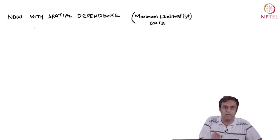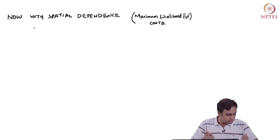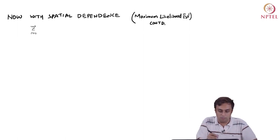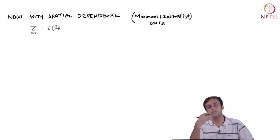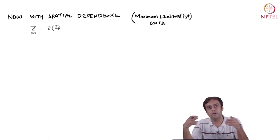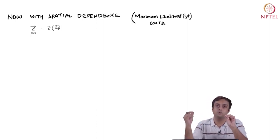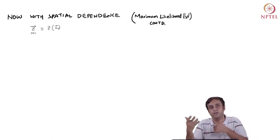Now that we have spatial dependence in data, the distribution of Z will look slightly different and we have seen that it will be different in the variance-covariance matrix representation. So, my sequence Z, which is the sequence of n data points that I have, I am now going to define it with a location vector S.